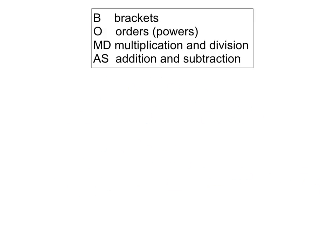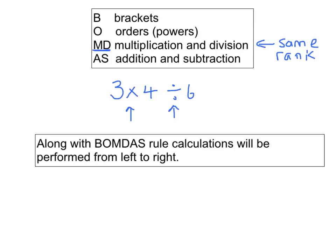Let's look at the calculation 3 multiplied by 4, divided by 6. Here we have two operations: a multiplication and a division. So if we go to the BOMDAS rule, multiplication and division have the same rank. One is not performed over the other. They have the same rank. Now what do we do in a case like this? Well, we have an additional rule, and that says that along with the BOMDAS rule, calculations will be performed from left to right.